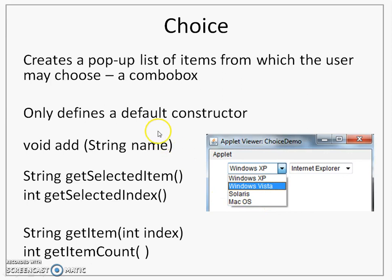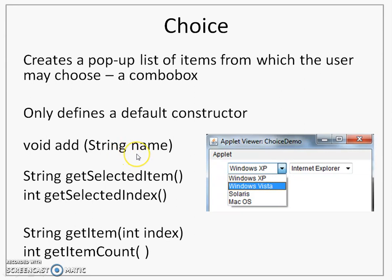There is only one default constructor available. Once you create a Choice using the default constructor, you call the add method again and again for adding the items. Items that you want to add are passed as string parameters. Once the items are added, they are assigned index numbers.